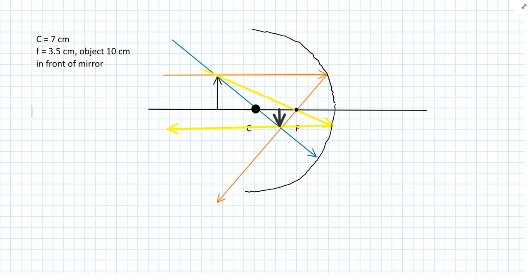Alright, on this one, we're going to say that we have a spherical mirror with a center of curvature of 7 cm. The radius of curvature is 7 cm. And the focal length is half of that, which is 3.5 cm.